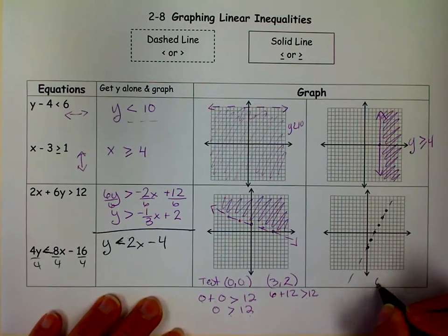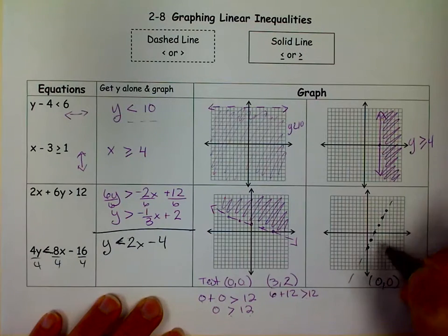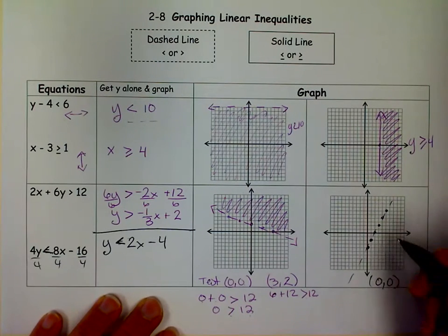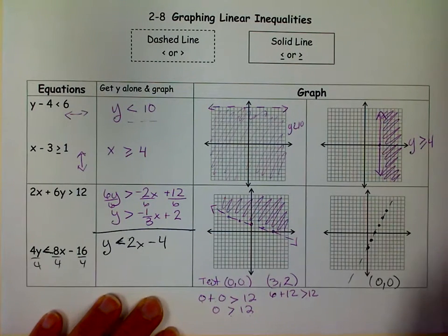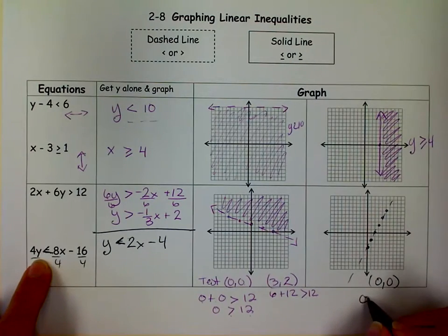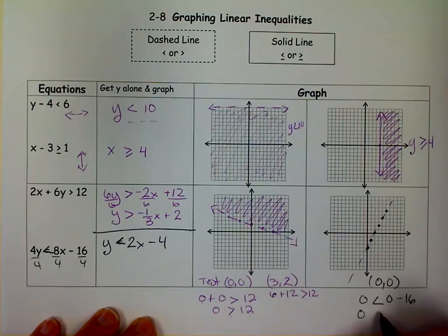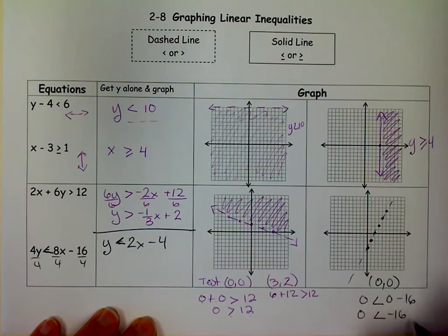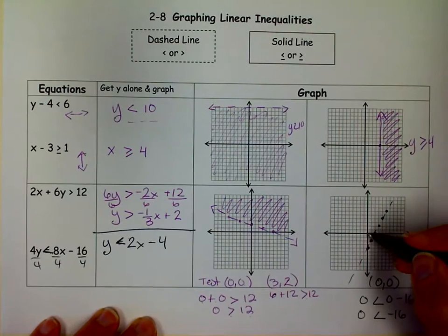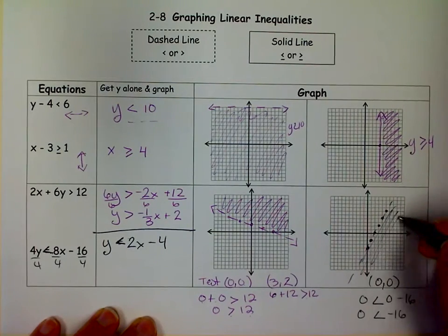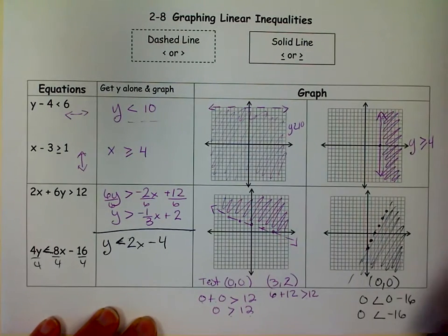Then I want to test a point. Again, 0,0 is not on my line. I can never pick a point on my line or I'll just get two things that are equal. So I'm going to pick 0,0. When I do that, I get 0 is less than 0 minus 16. And 0 is not less than negative 16. 0 is bigger than negative 16. So I don't shade where 0,0 is. I would shade the opposite side. You can pick any point on your graph except for the point on the line.